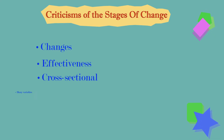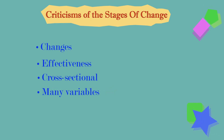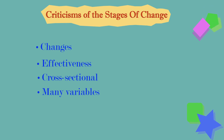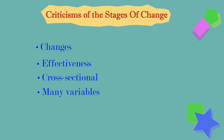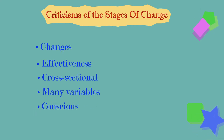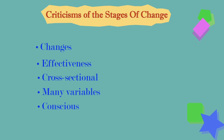The concept of a stage is not simply one that includes many variables — current behavior, quit attempts, intentions to change, and time since quitting. Perhaps these variables should be measured separately. Additionally, the model focuses on conscious decision making and planning processes, and assumes that people make coherent and stable plans.